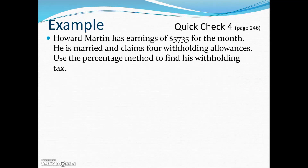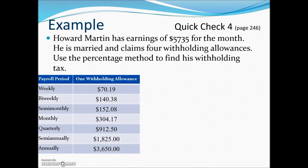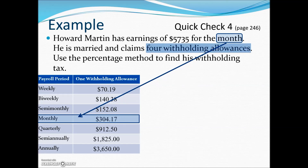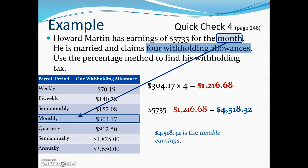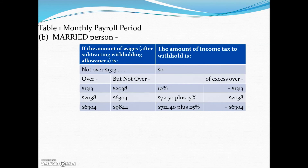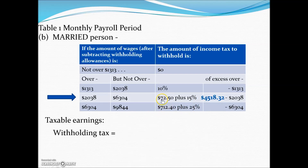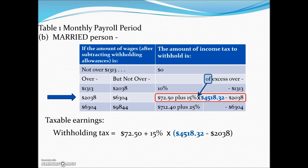Howard Martin has earnings of $5,735 for the month. He is married and claims four withholding allowances. Using the percentage method, the monthly withholding allowance amount is $304.17. Multiplying by four allowances gives the total allowance, which we subtract from his gross wages to get his taxable earnings. Going to the married portion of the percentage method tax table and finding the interval that captures his taxable earnings, the withholding is a flat $72.50 plus 15% of the difference. Doing that calculation, we get his federal income tax withholding amount.